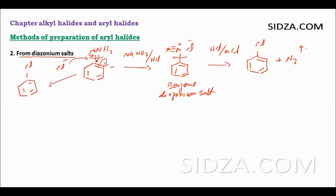That is why aniline is first converted to the diazonium salt through a process called diazotization. In the benzene diazonium salt, the nitrogen no longer has a lone pair available for delocalization, so the C–N bond can be broken easily by nucleophiles. This reaction — preparing chlorobenzene or bromobenzene from benzene diazonium salt using copper chloride and HCl — is called the Sandmeyer reaction.